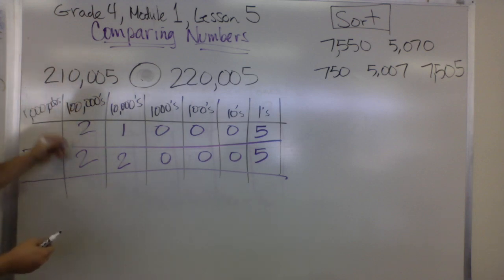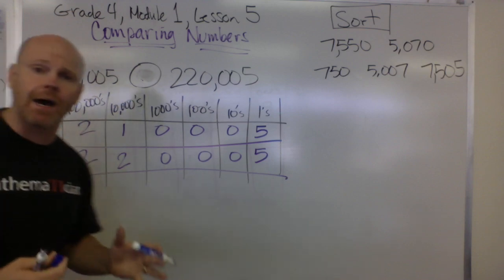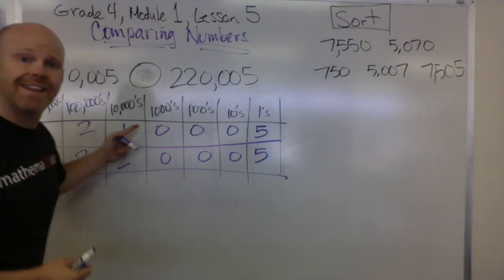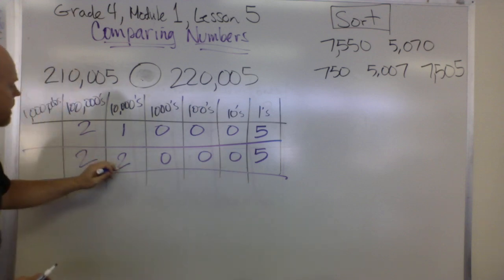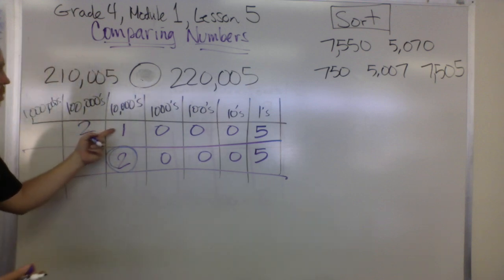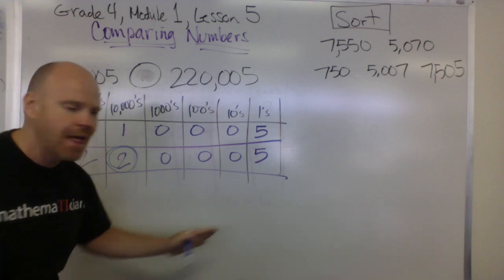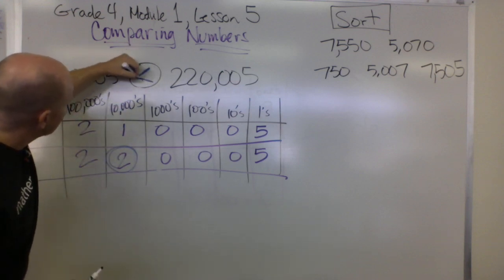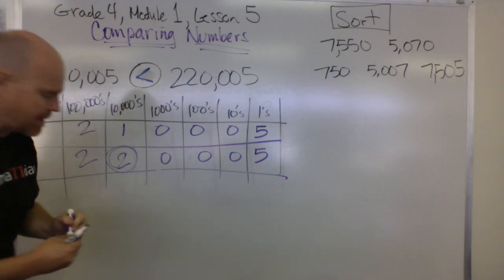We can see that each of them have two copies of the hundred thousands, so right now these two numbers are tied. Then we can go to the ten thousands column and we can see that this second number has two copies of the ten thousands versus one copy of the ten thousands. Automatically that makes this number, the second number, larger than the first number up here.